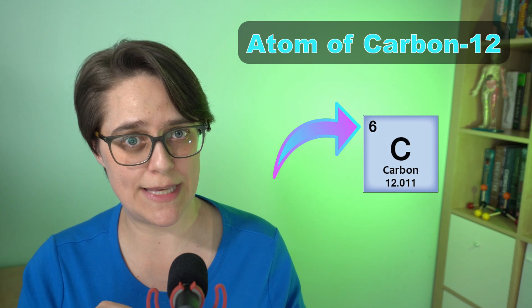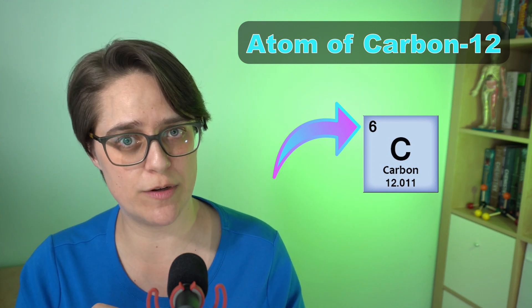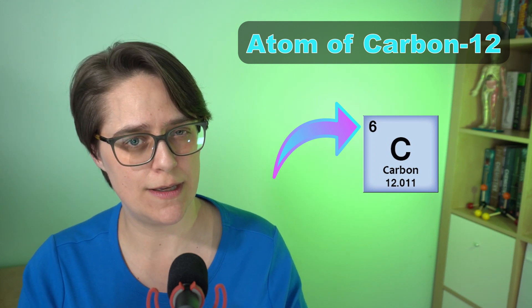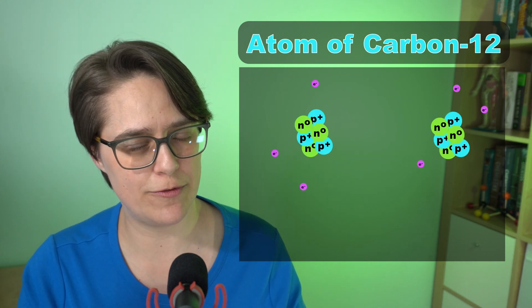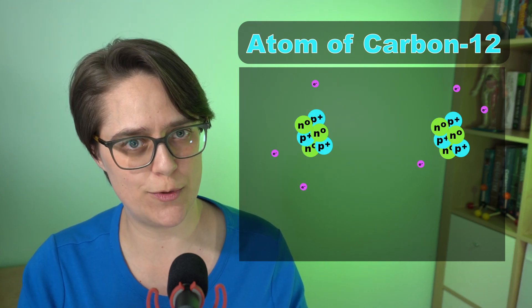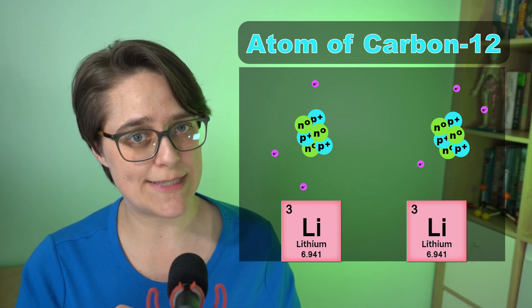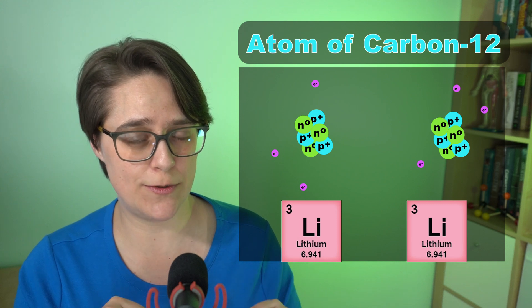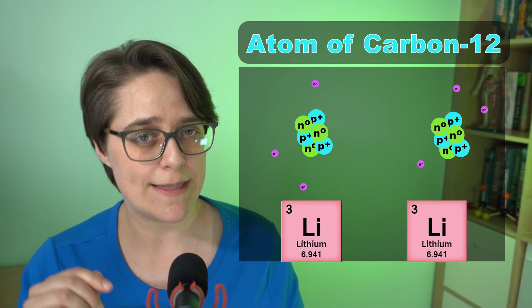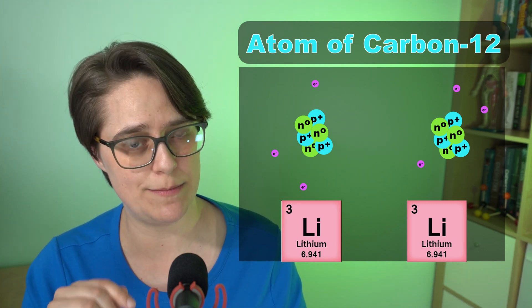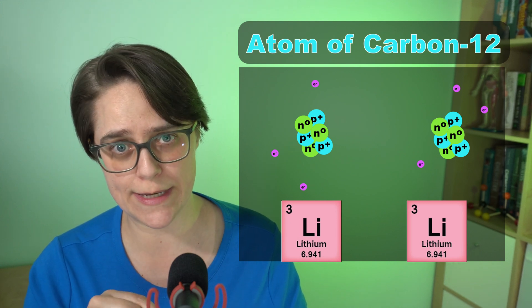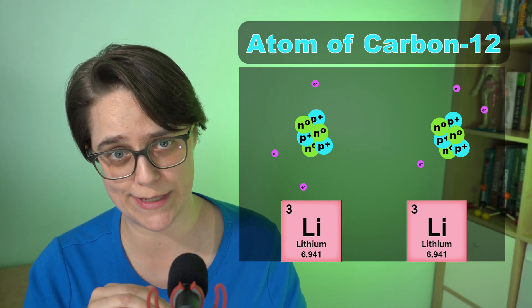The identity of the atom is tied to the number of protons in the nucleus. If you cut this atom exactly in half, you do not get two carbon atoms. You get two lithium atoms, because atoms with three protons in the nucleus are lithium. This is also not something we can do easily. This would be a nuclear reaction, not a chemical reaction.